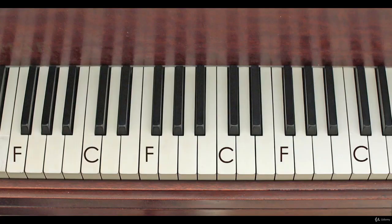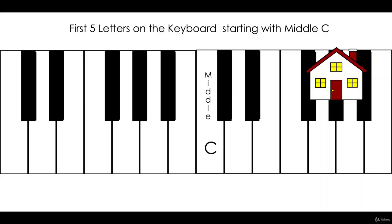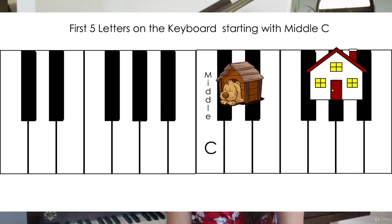Now that you've taken some time to get to know where C and F are, I think you're ready to meet the others. Can you please find me middle C again? You can press that note down. Now have a look at the next white note to the right going up from C. That is the dog who's in the dog kennel, so that note is D.